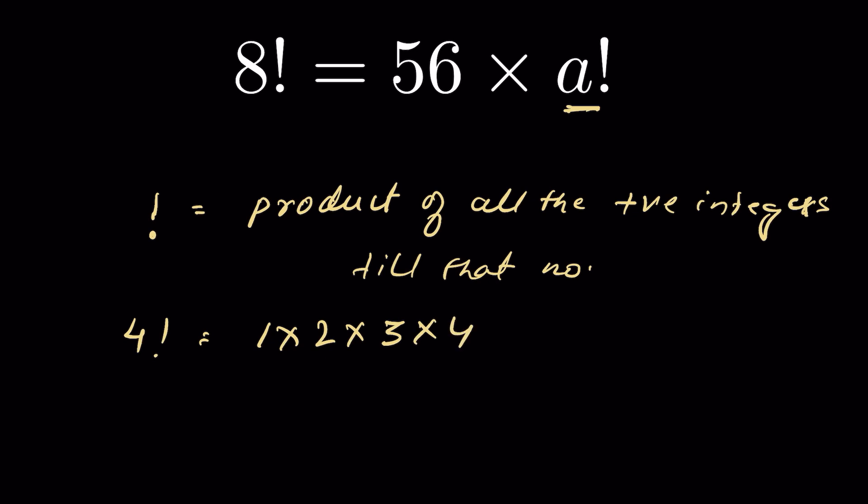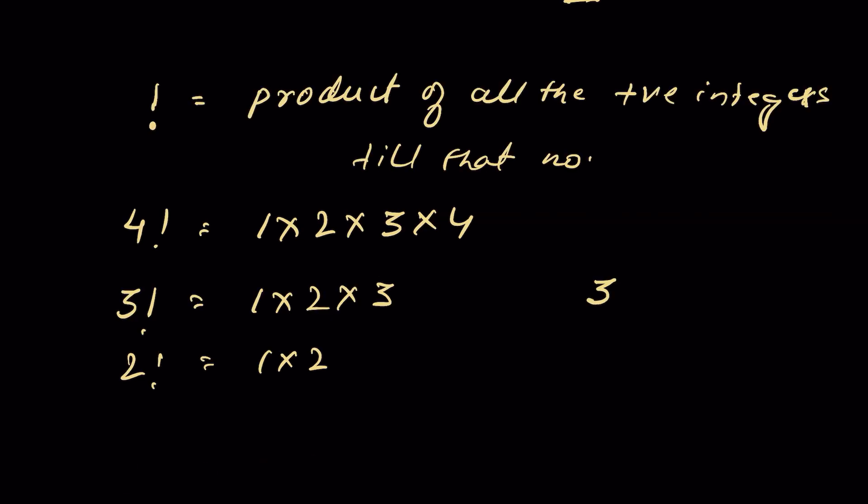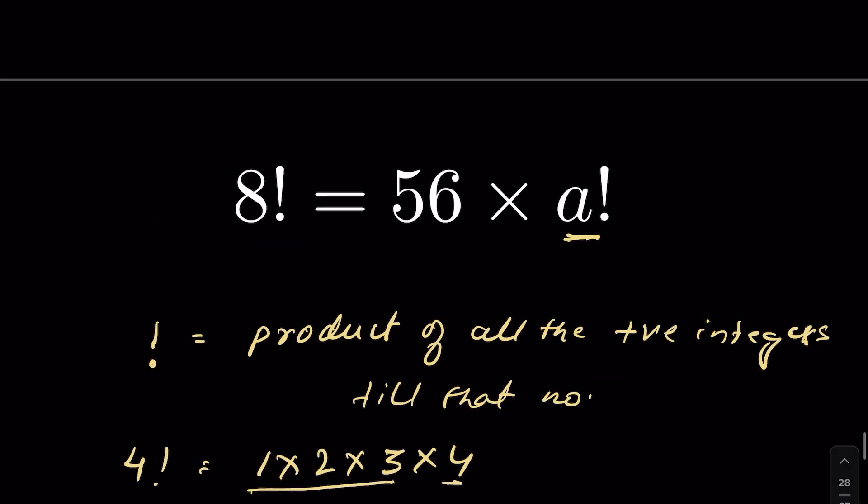3 factorial will be 1 times 2 times 3. 2 factorial is 1 times 2. So if you write 3 factorial and multiply 4 with it, then it becomes 1 times 2 times 3 times 4, which is 4 factorial. You can solve using this property. Now we have 8 factorial equals 56 times a factorial.